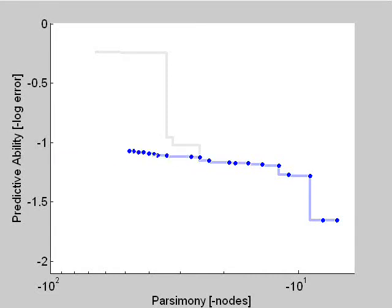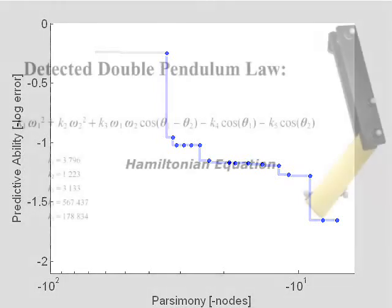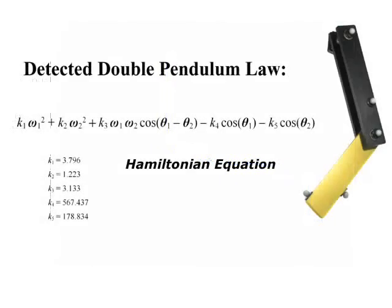At some minimum complexity near the center of the plot, the equation's ability to model a non-trivial law increases rapidly. More complex equations improve only marginally. The equation that the algorithm found at this point of inflection is the Hamiltonian equation of the double pendulum, which represents the physical law of energy conservation.